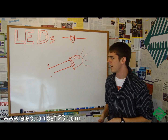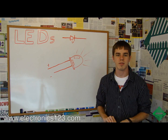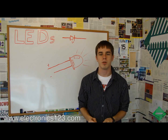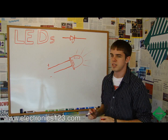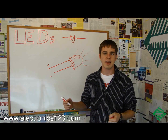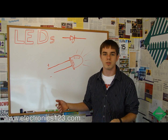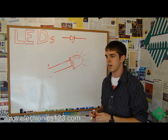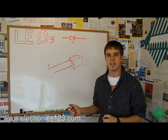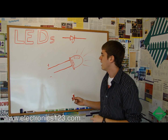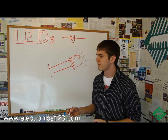Another thing that sets LEDs aside is they usually have a very specific voltage drop. This means that you really can't take an LED and put 9 volts through it — if you actually try to run an LED with a 9 volt, it'll burn it up.